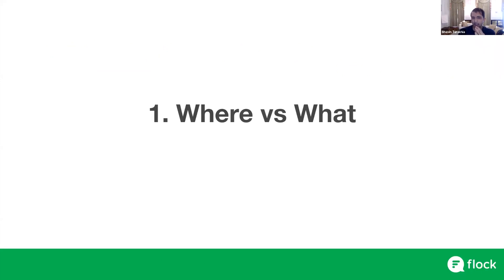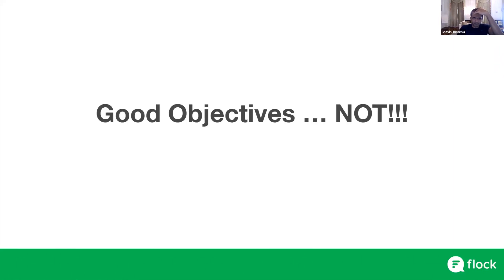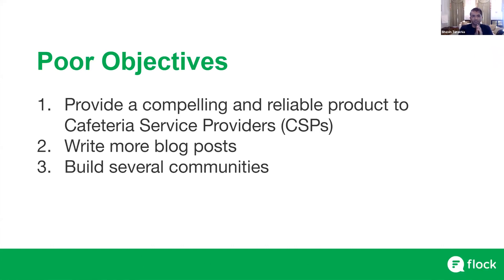The biggest issue I've seen is this whole notion of where versus what — a lot of people writing objectives in terms of what we want to do, as opposed to the right questions of where we want to go, how do we know we're getting there, and what are we doing to get there. The best way to illustrate this is with examples of what are not good objectives. For example: 'provide a compelling and reliable product to cafeteria service providers,' or 'write more blog posts,' or 'build several communities.'